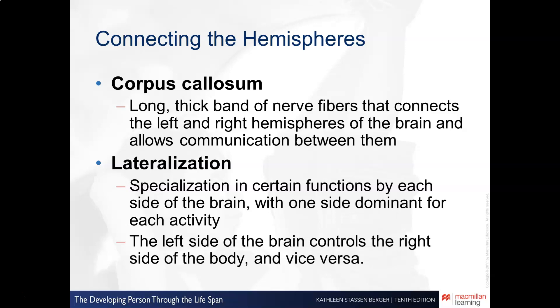Most of us have heard of left brain and right brain — what we're referring to are the hemispheres, connected by the corpus callosum. The next term to be aware of is lateralization — the specialization of certain functions in each side of the brain. Broadly, the left brain controls the right side of the body and specializes in verbal information, while the right brain specializes more in imagery.